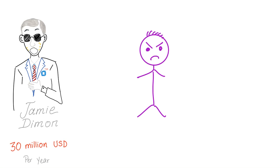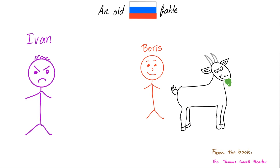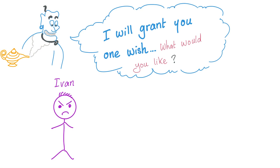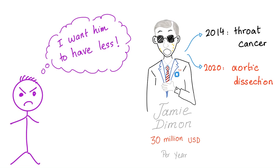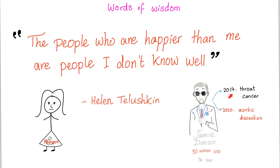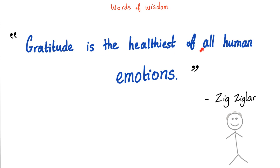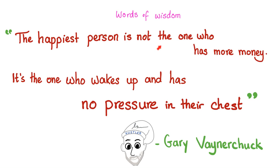Why mention Jamie Dimon? In an old Russian fable, two farmers — Ivan and Boris — existed. Boris had a goat but Ivan did not. A genie granted Ivan one wish, and Ivan said, 'I want Boris's goat to die.' That's the wrong mindset — wishing others had less rather than striving to do more yourself. Jamie Dimon had throat cancer in 2014 and an aortic dissection in 2020. Gratitude is the healthiest of all human emotions. The happiest person is not the one with more money — it's the one who wakes up with no pressure in their chest.